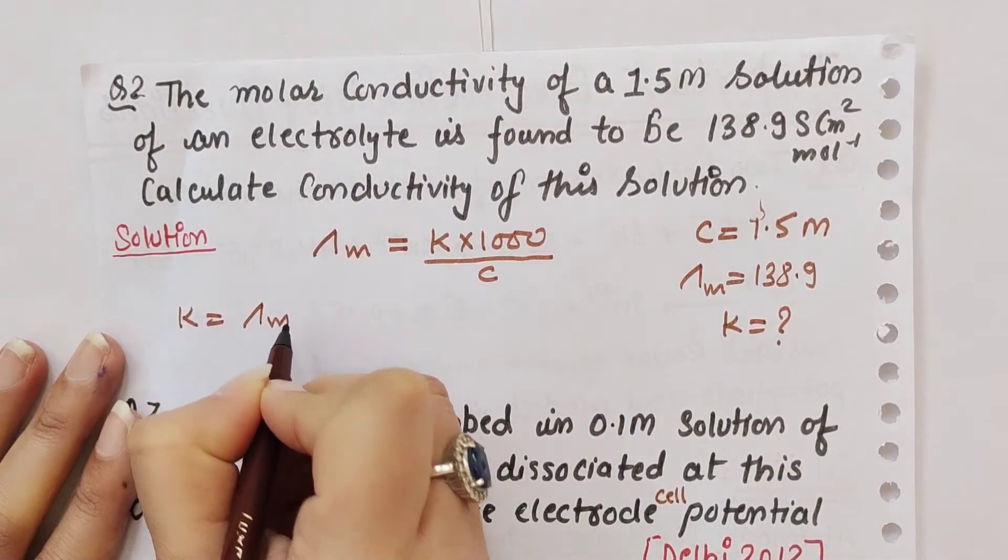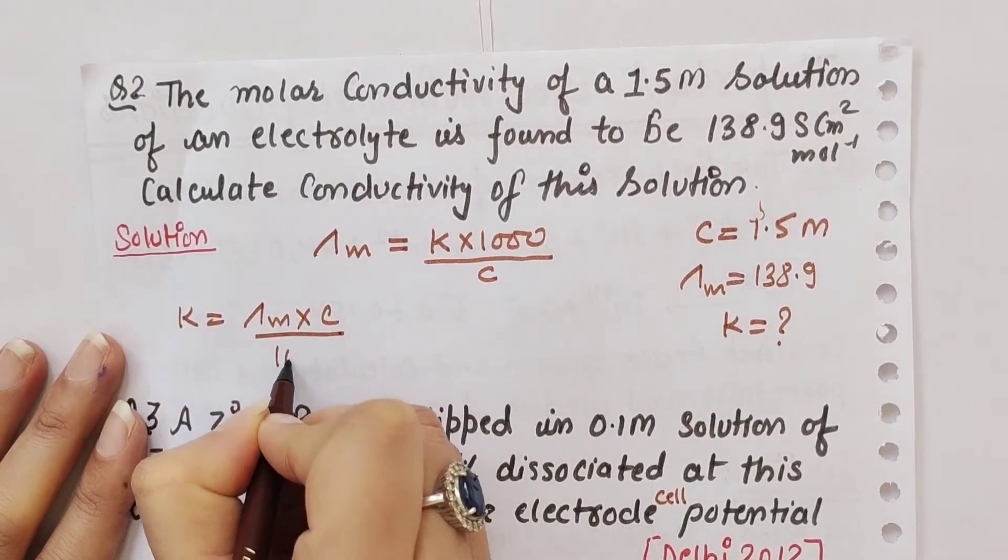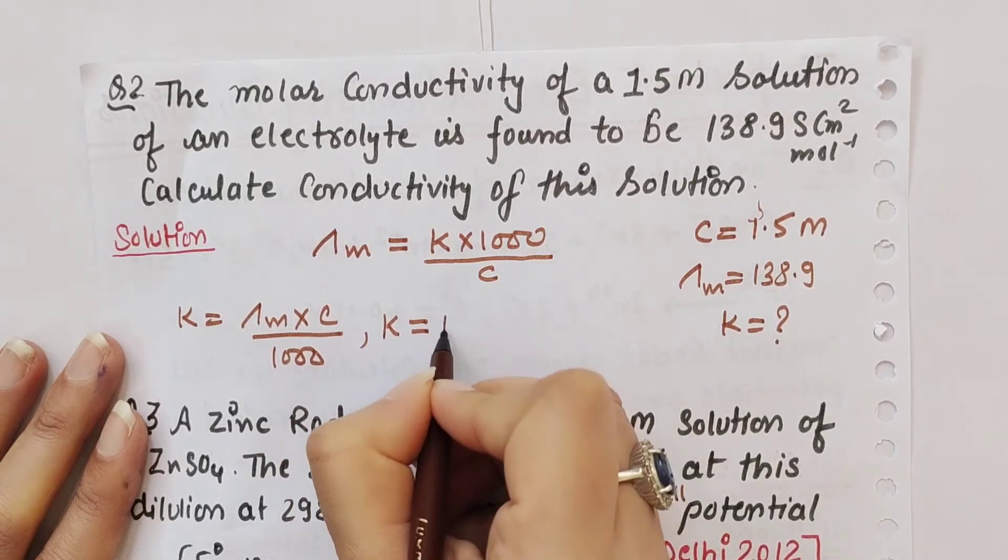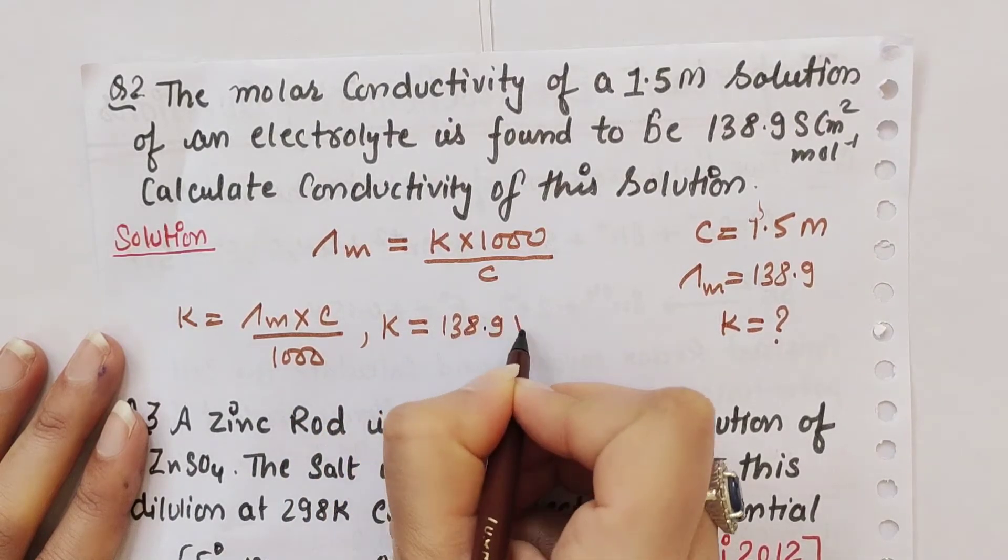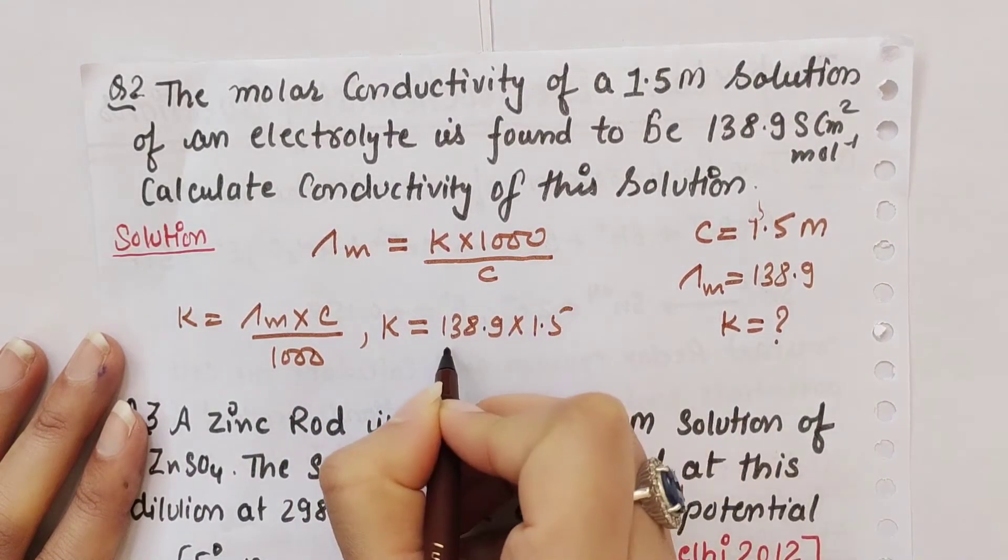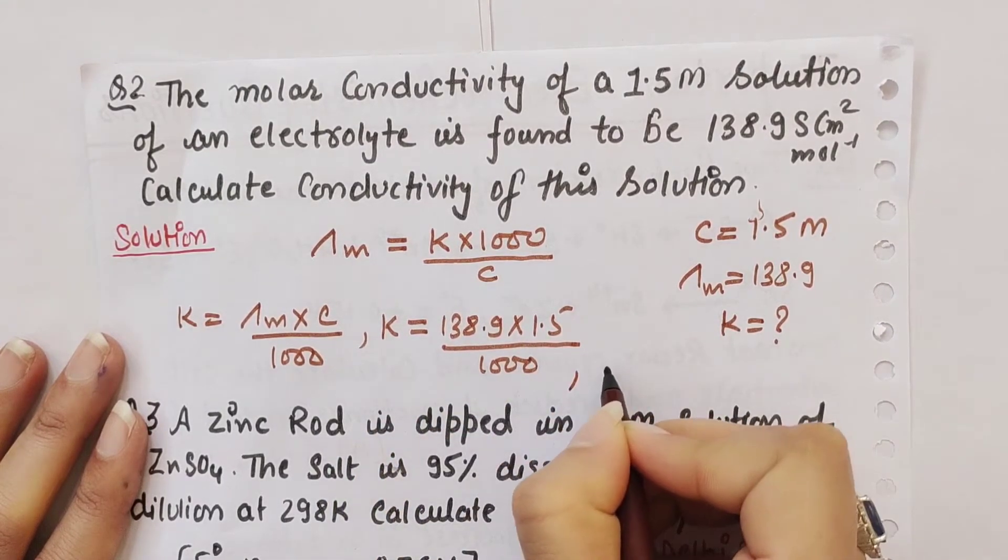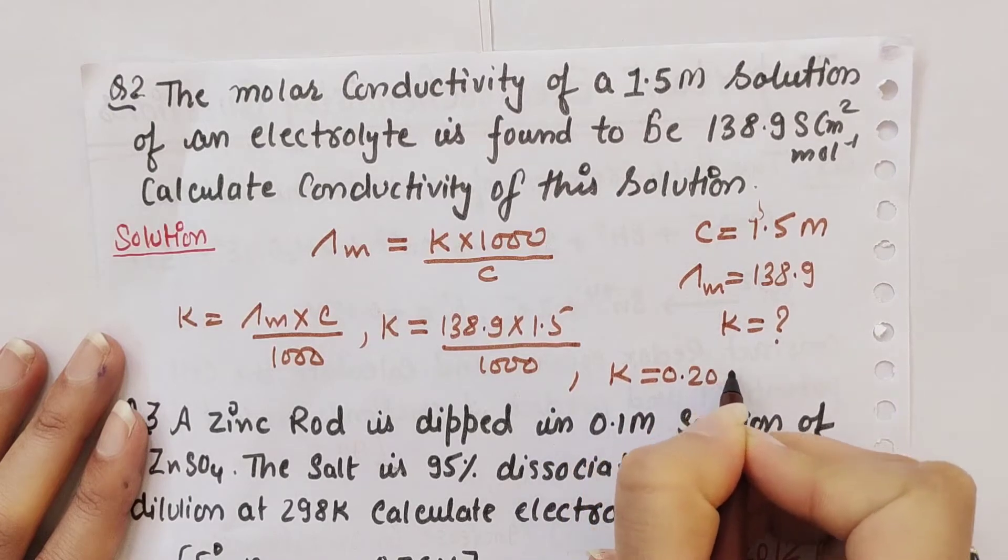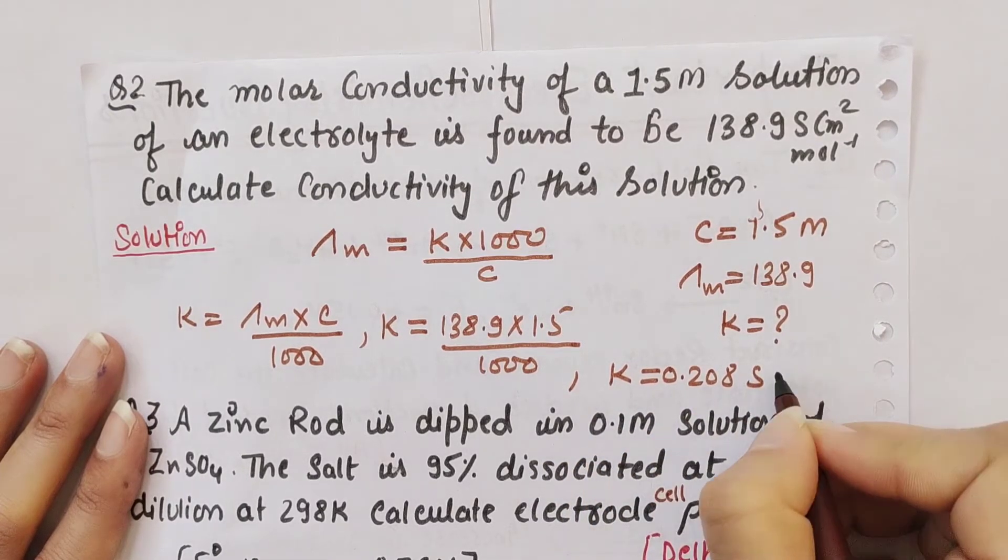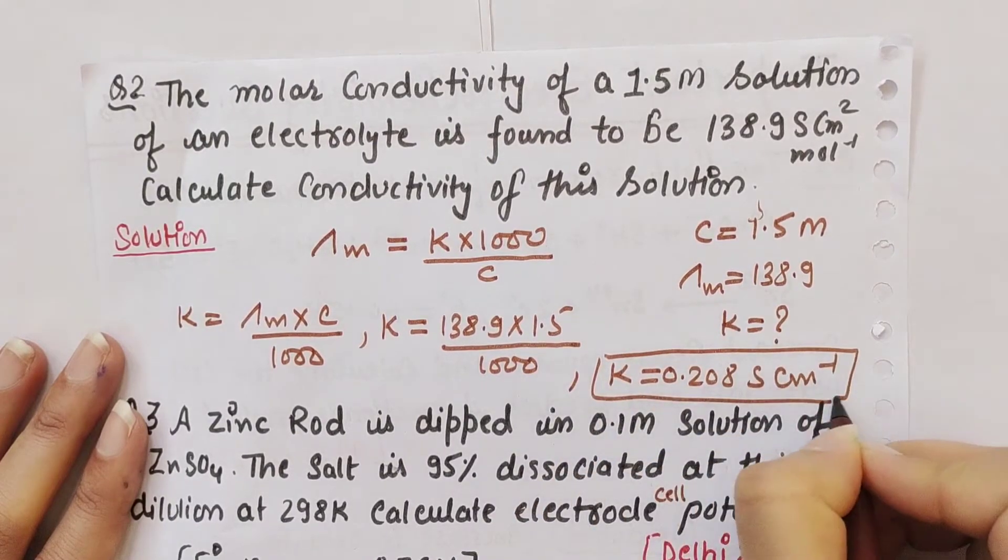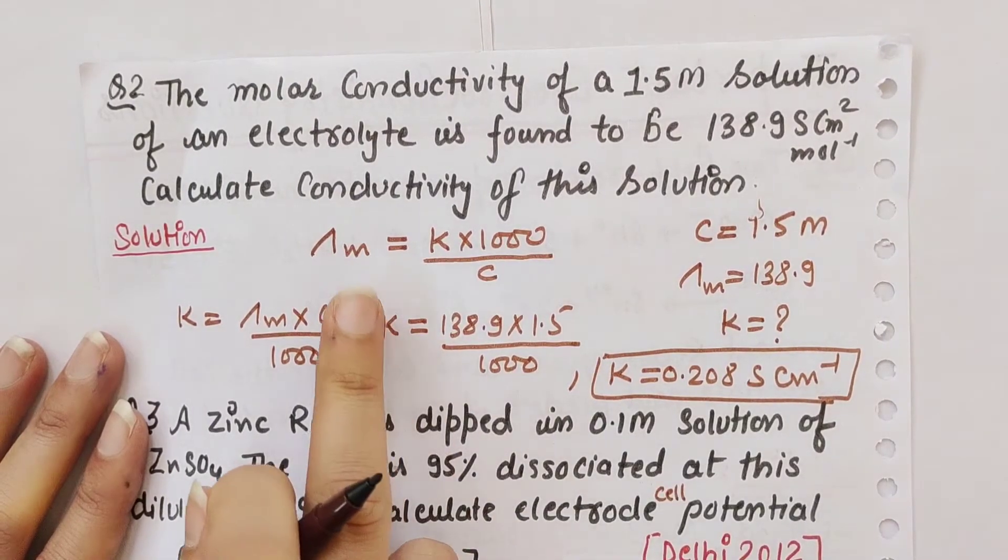Rearranging, κ = molar conductivity × concentration / 1000. Putting the values: κ = 138.9 × 1.5 / 1000 = 0.208 siemens per centimeter. This is the conductivity of the solution.